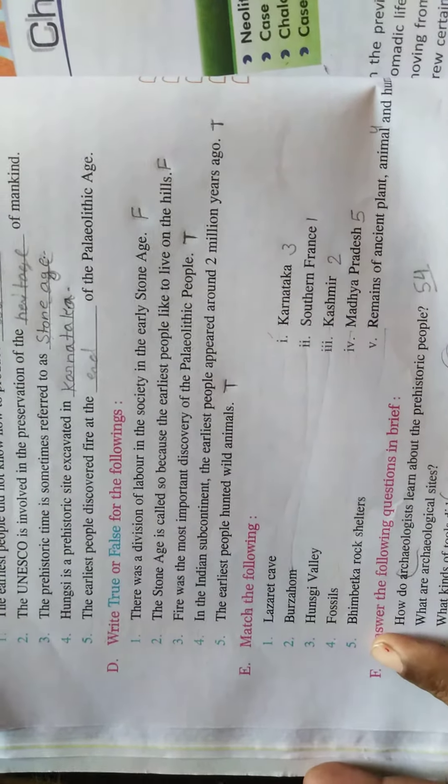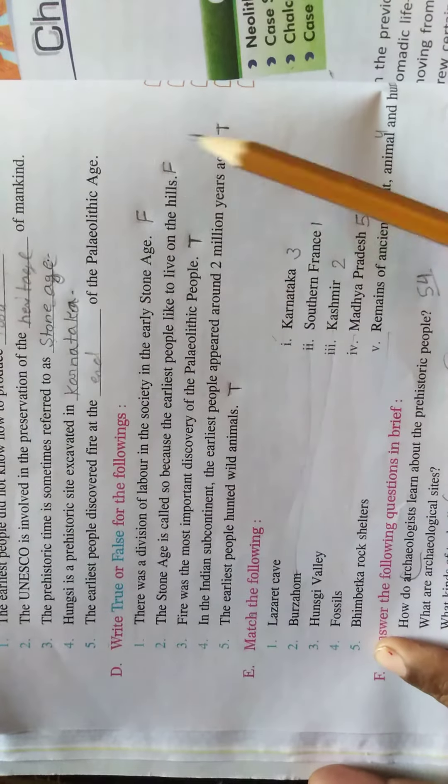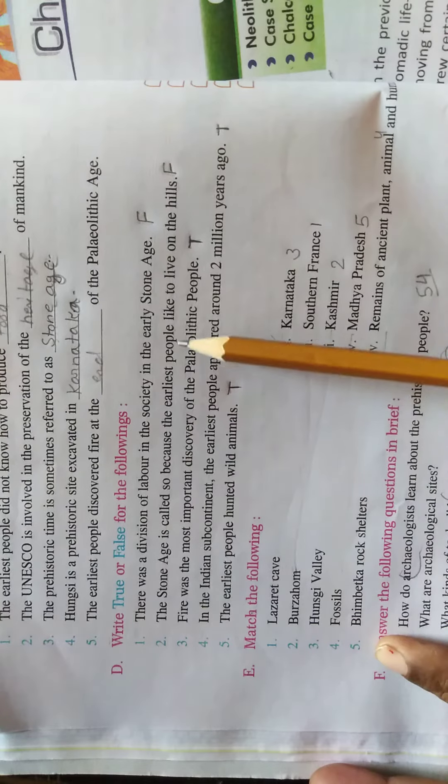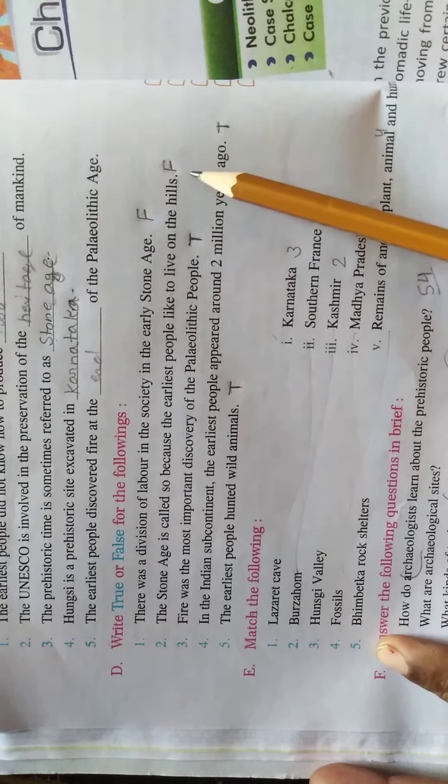Next step is true-false. First is false. Second, the Stone Age is also called stone because the earliest people like to live on the hills. It's false.